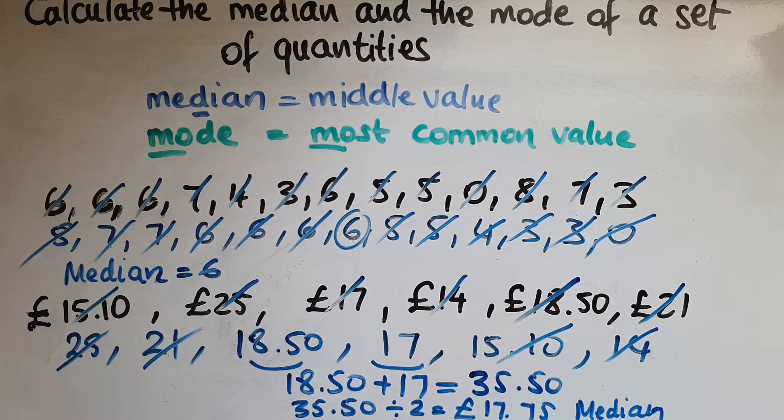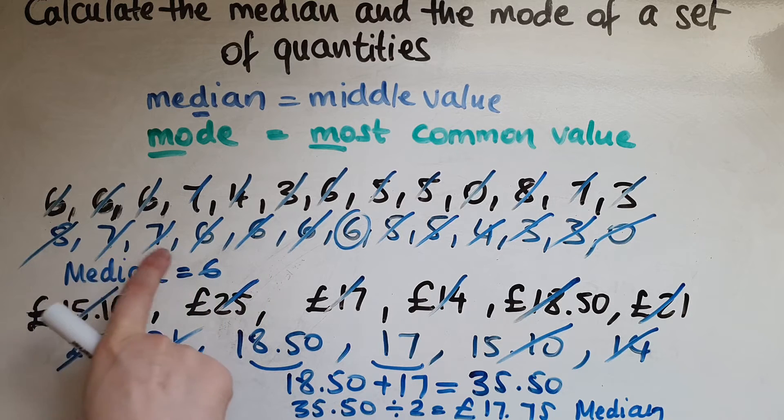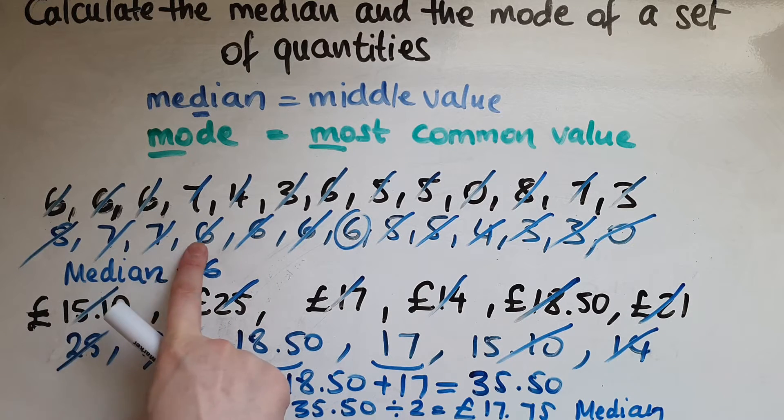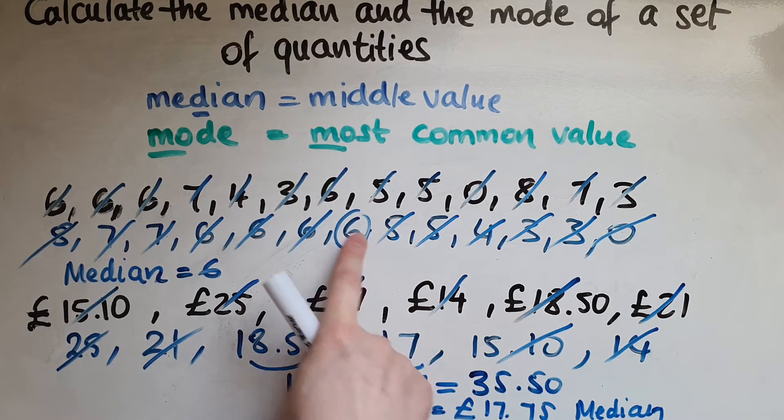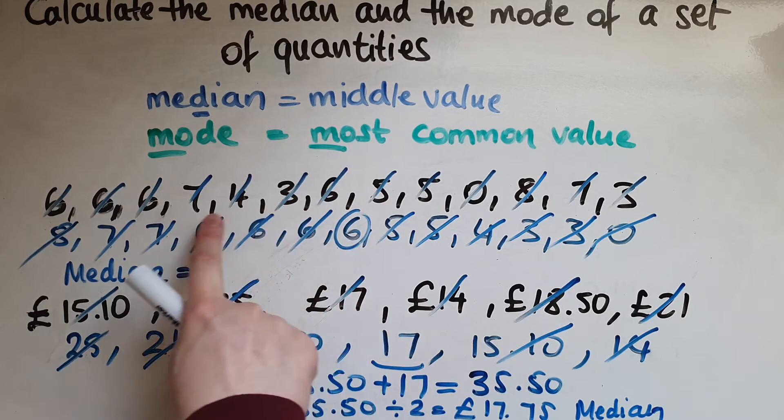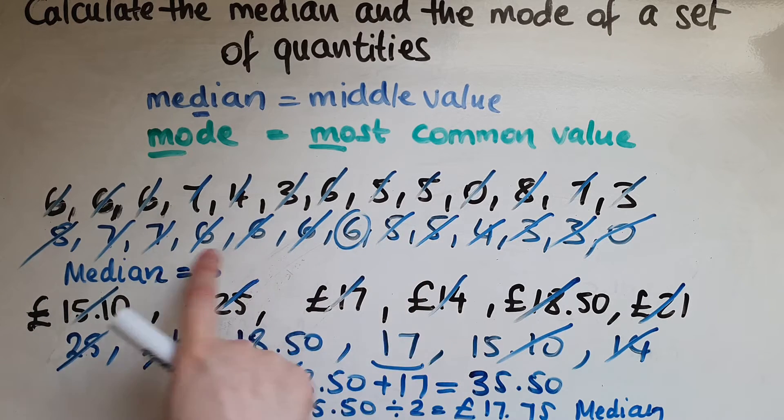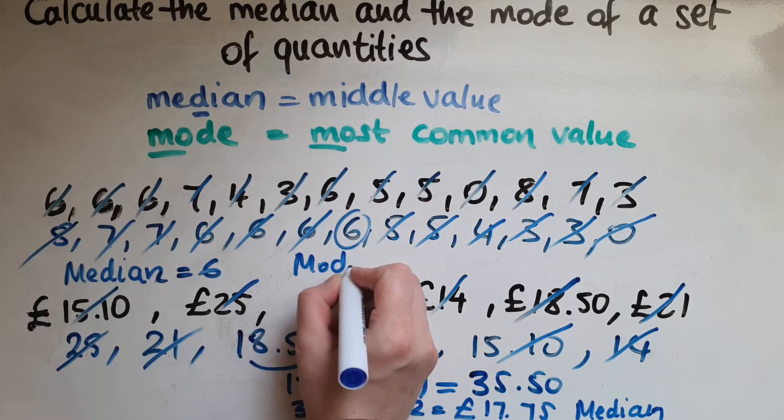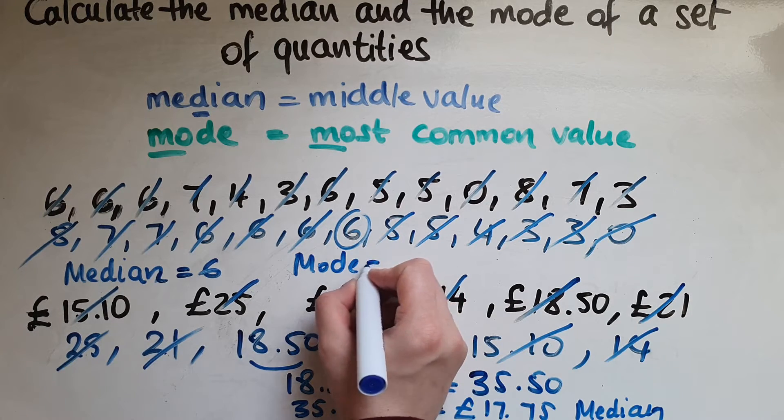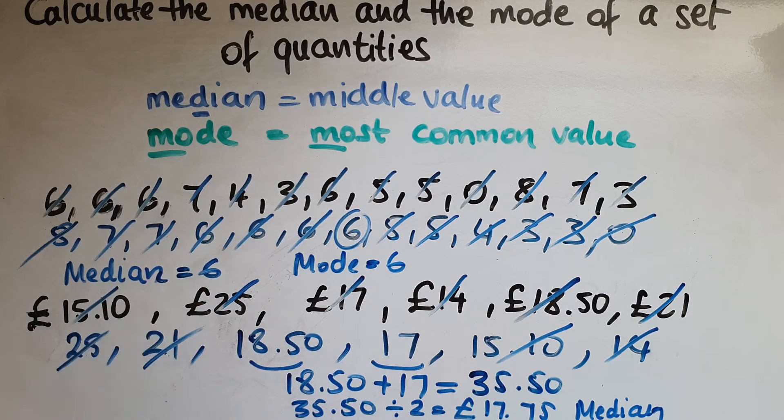Now, the mode is the most common value, the one that repeats itself most. So if I have a look at these, I've got two sevens. But I've got one, two, three, four sixes. I've got two fives as well. So I've got more sixes than I have fives or sevens. So for this case, the mode is equal to six as well, just like the median for this set.